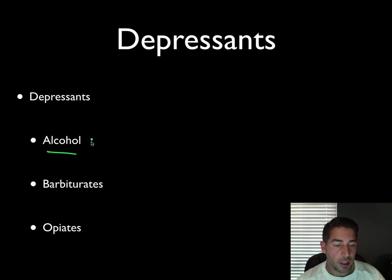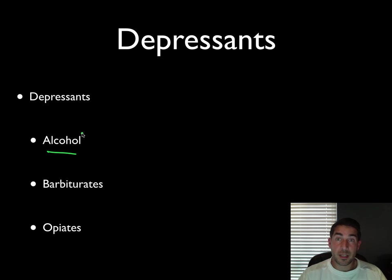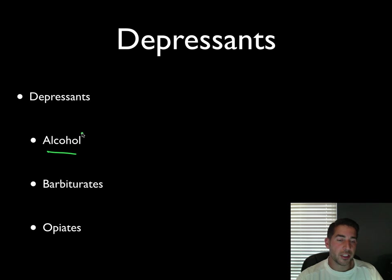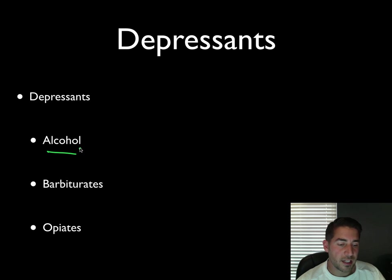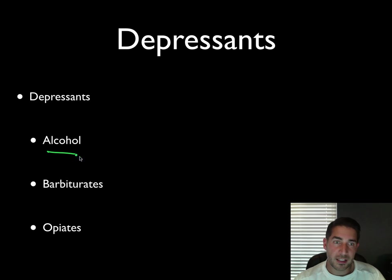Some examples of depressants: alcohol is a depressant. Alcohol in moderate amounts has been shown to be beneficial in most cases, but often times alcohol — especially for teenagers and young 20-year-olds — can be detrimental because you can overconsume and binge drink. Some negatives associated with alcohol include disinhibition, slow neural processing, memory disruption, reduced self-awareness, and expectancy effects.